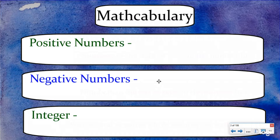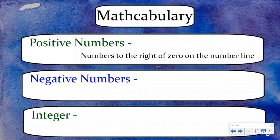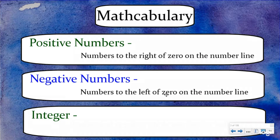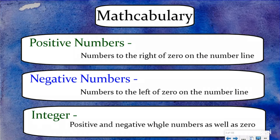First we need to start with our math vocabulary. Positive numbers are the numbers you have been dealing with basically your entire life — they are the numbers to the right of zero on the number line and are the ones we typically use on a day-to-day basis. Negative numbers are the numbers to the left of zero on the number line. An integer is positive and negative whole numbers as well as zero, so that includes all numbers to the right and left of zero on the number line. We will be using these three math vocabulary terms the entire unit.